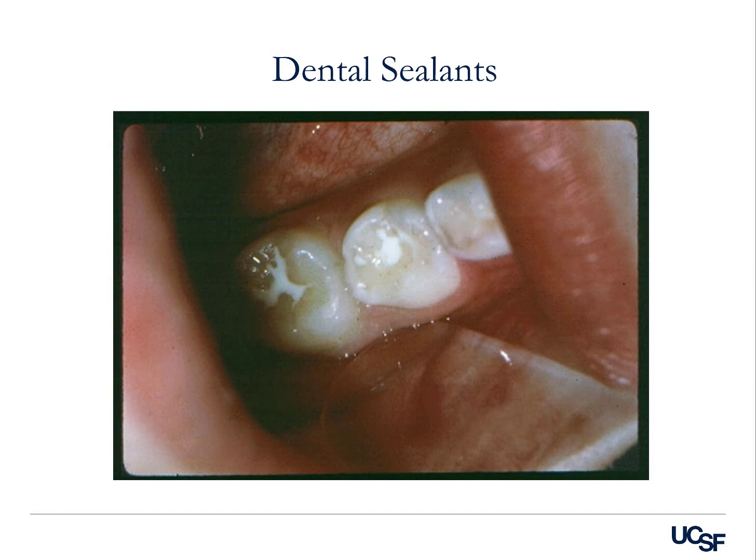Dental sealants come in many types, but mainly break down into resin-based or glass ionomer-based or resin-modified glass ionomer. If it is resin-based, the teeth must be completely isolated and bone-dry before being applied. Whereas glass ionomer-based sealants are less moisture-sensitive. Depending on the scenario, you decide which material to apply. The idea is that this material will flow into the deep grooves, pits, and fissures and seal them, preventing impaction of food and bacteria and preventing caries formation.